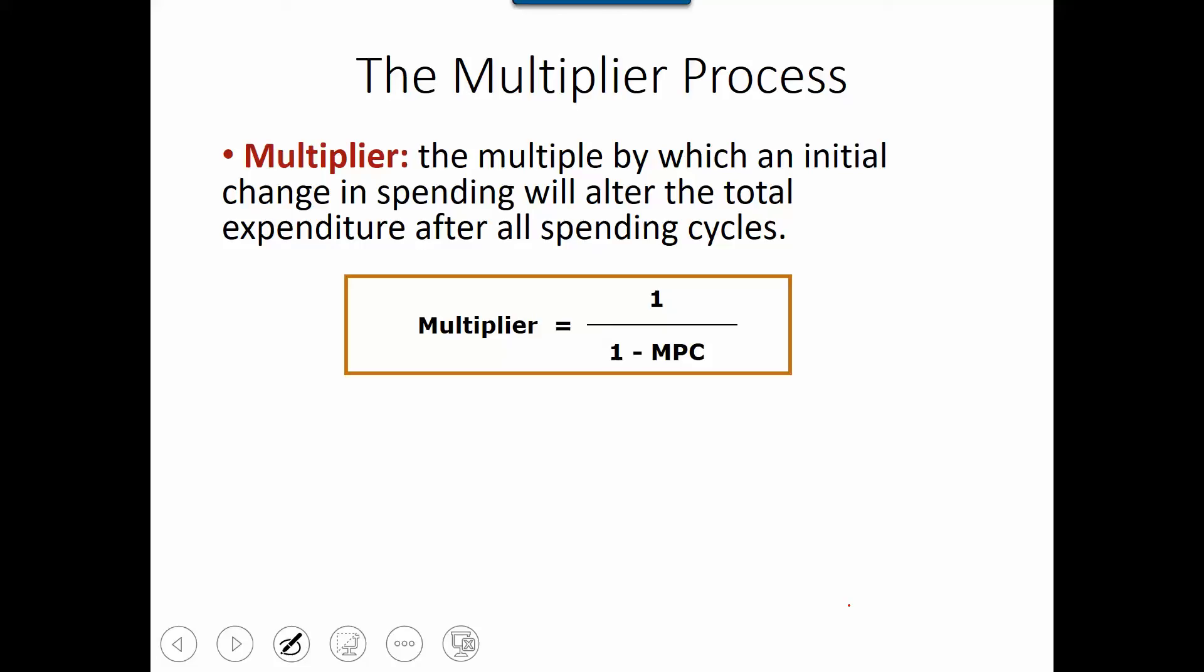we understand if investment decreases it will cause the economy to go to the back cycle. But we didn't know at the end how much in terms of GDP will decrease. By understanding the multiplier, we'll be able to use quantitative methods to measure how much GDP will decrease if the economy goes down by the initial investment decrease.